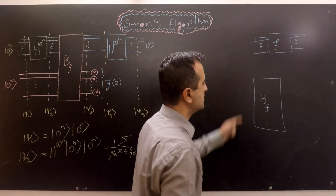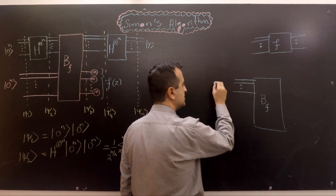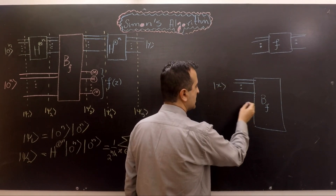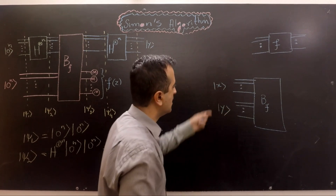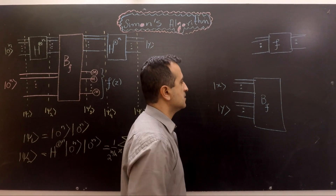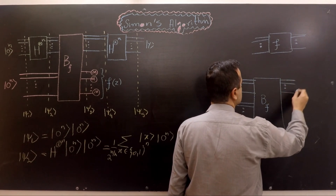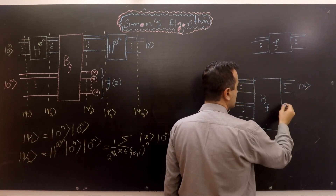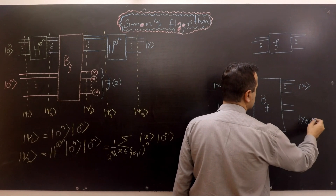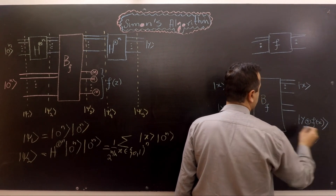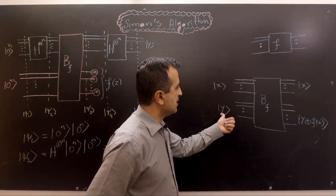The unitary wrapper of function f takes two registers as input. We call the first register x and the second register y. Both of those registers are n bits long. The output of this unitary wrapper is register x as it is, and the exclusive OR of y with the outcome of function f.